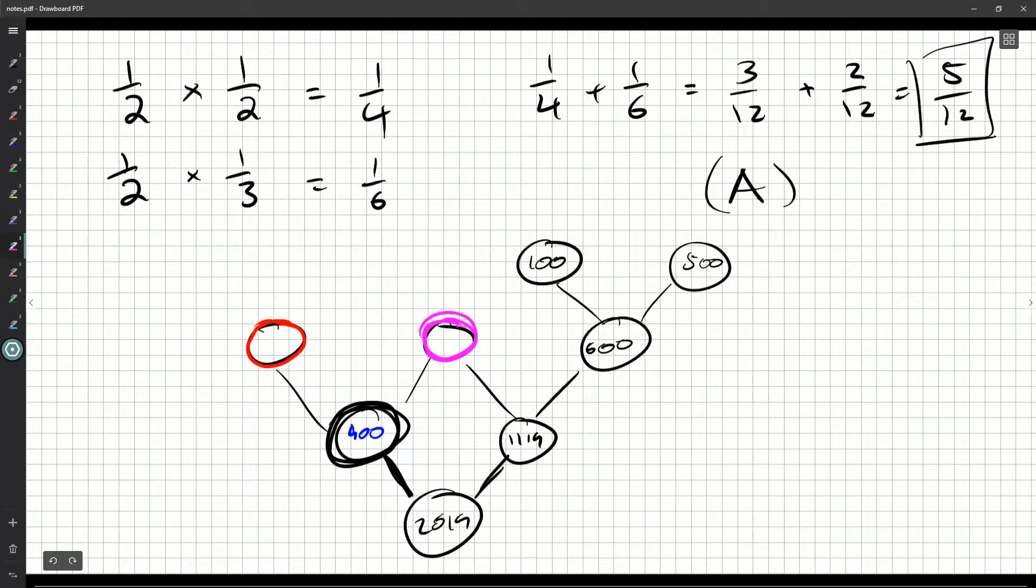Well, that plus the 600 over here has to equal 1119. So with a calculator, or you can work it out in your head, you get 519 there.